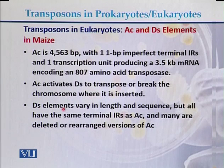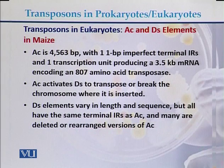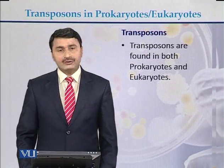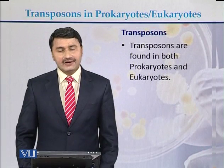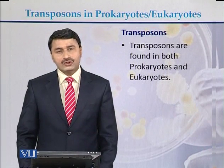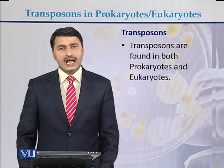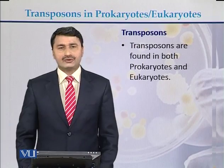The Ac element activates Ds to transpose or break the chromosome where it is inserted. Ds elements vary in length and sequence but all have the same terminal IR sequences as Ac, and many are deleted or rearranged versions of the Activator element. In conclusion, transposons are found in both prokaryotes and eukaryotes.